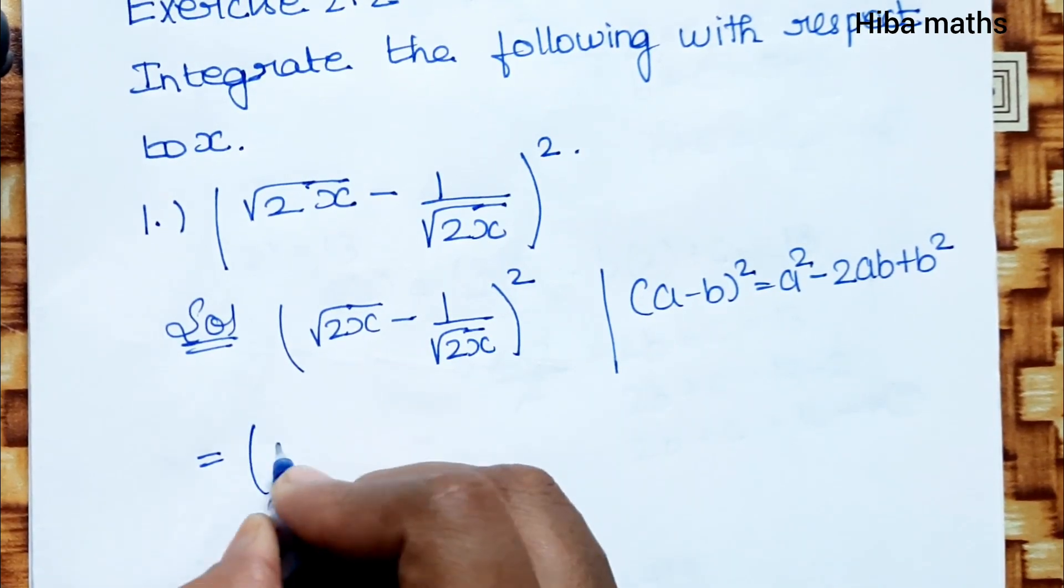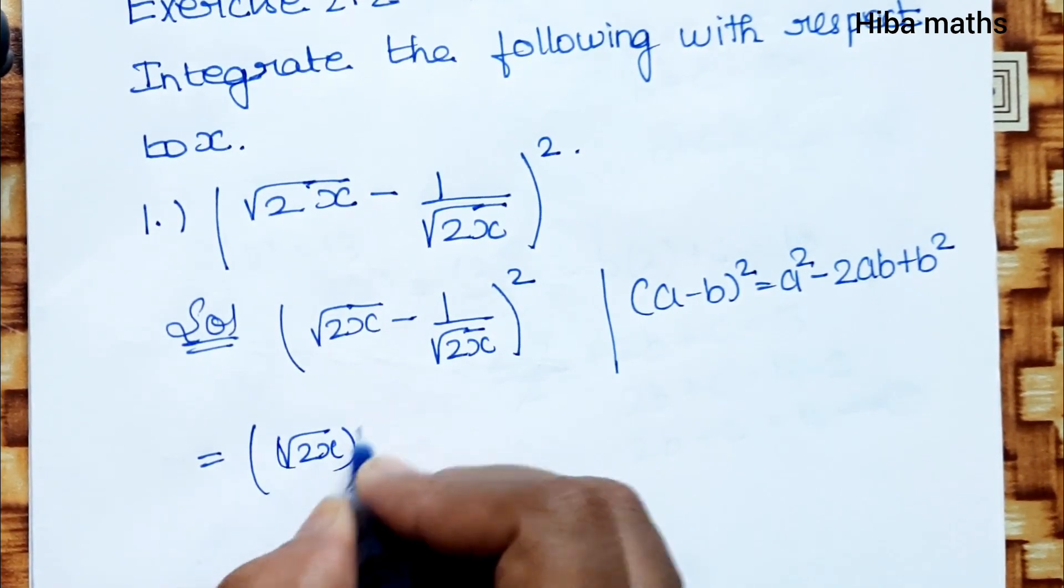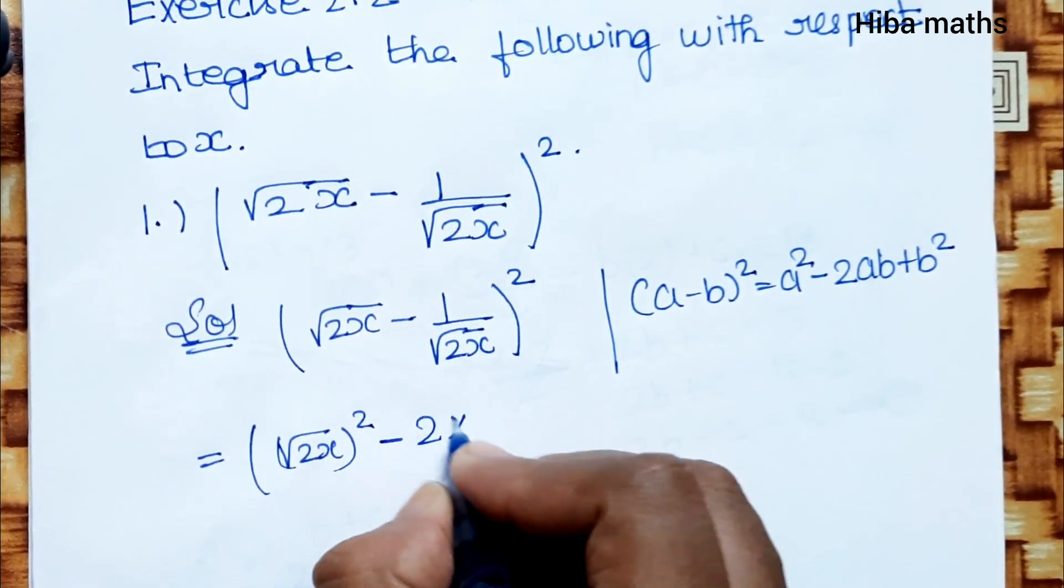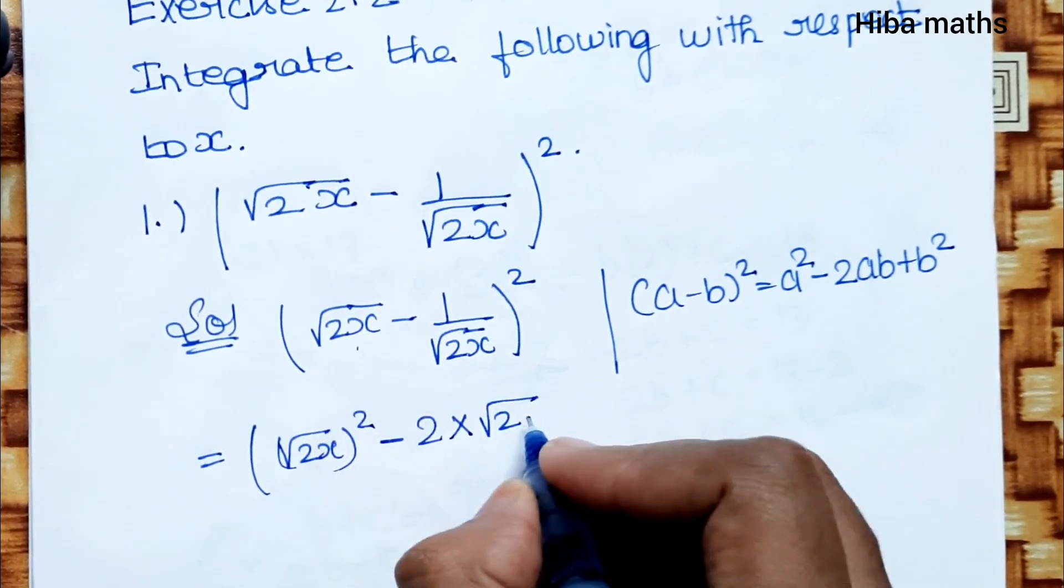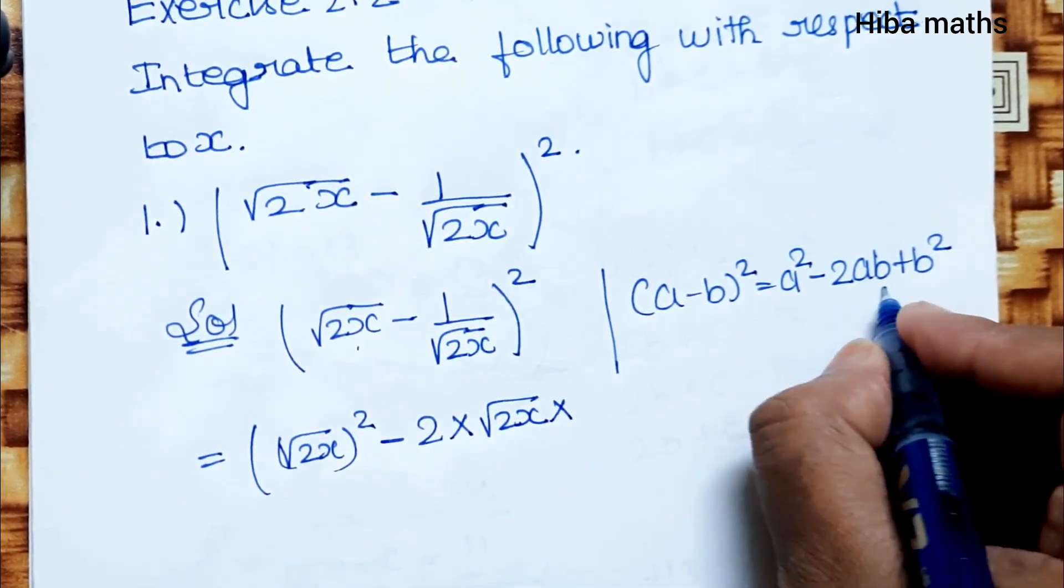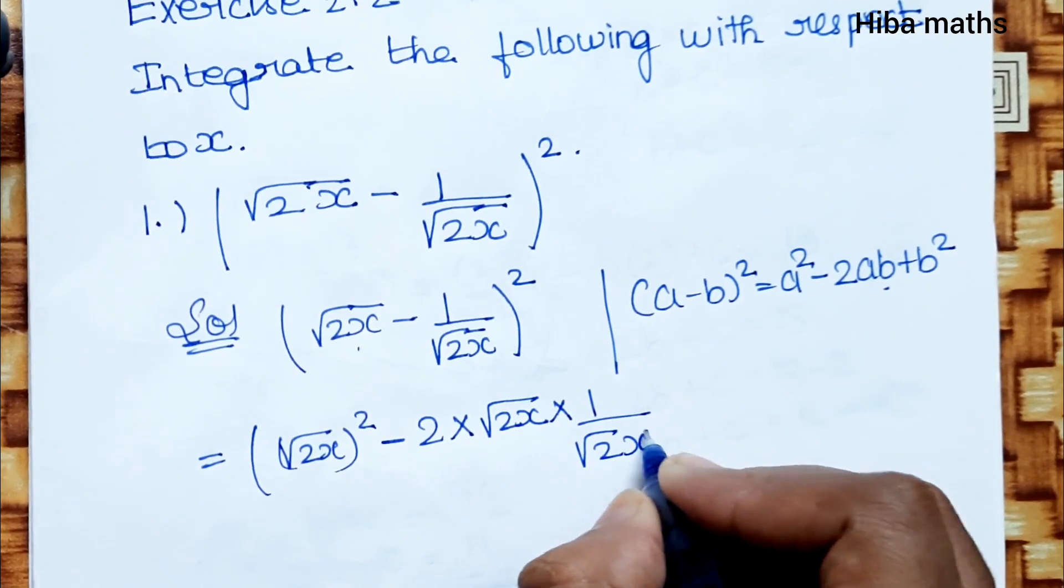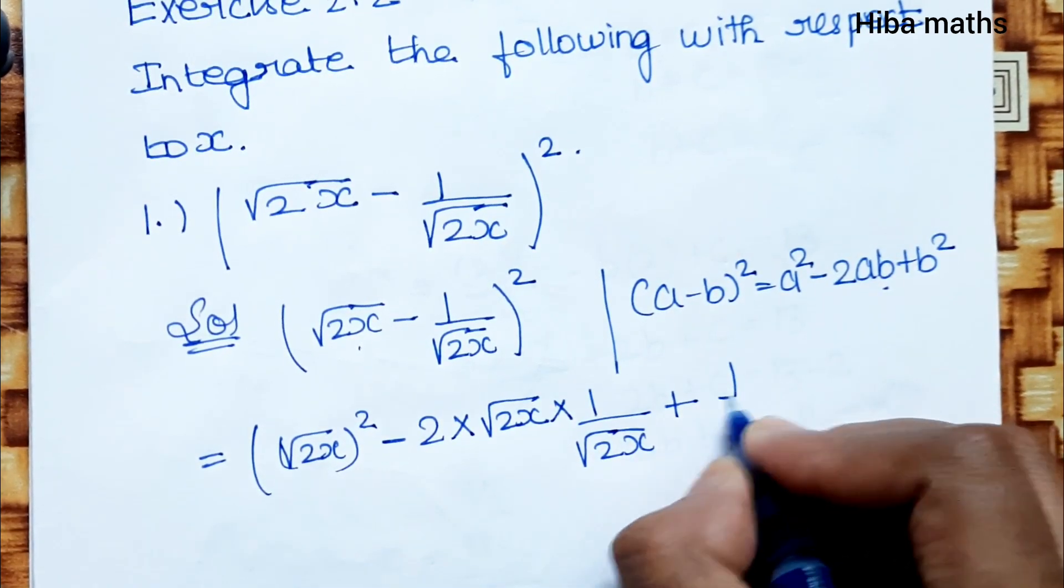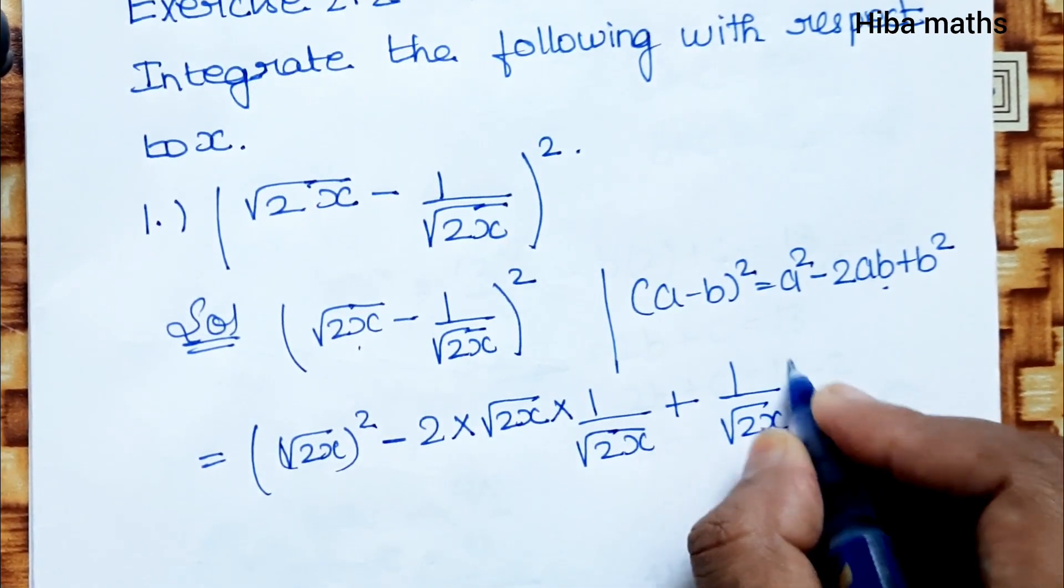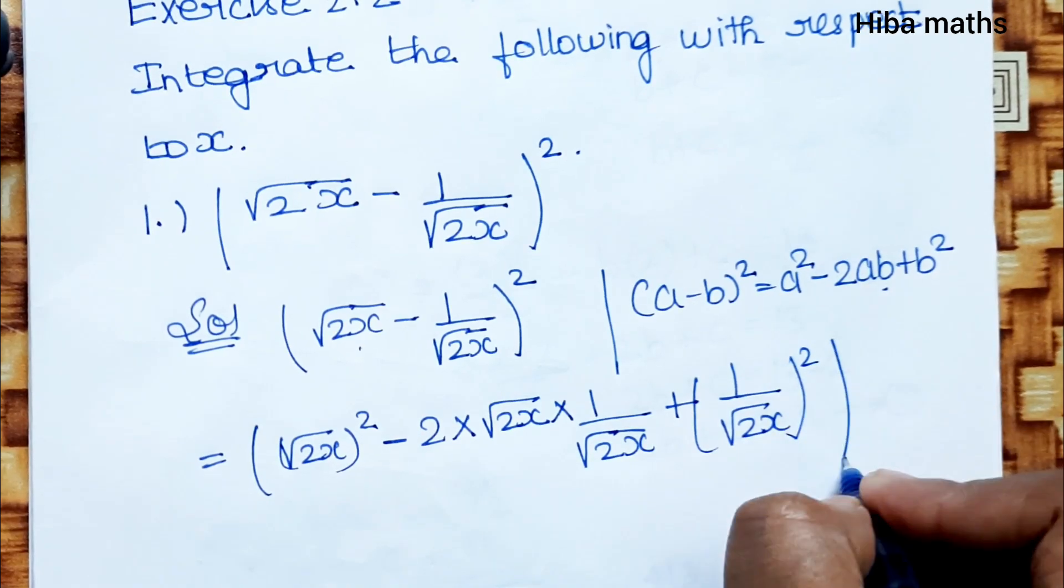So a² is (√(2x))², minus 2 times a times b, which is 2 times √(2x) times 1/√(2x), plus b² which is (1/√(2x))². Understand?